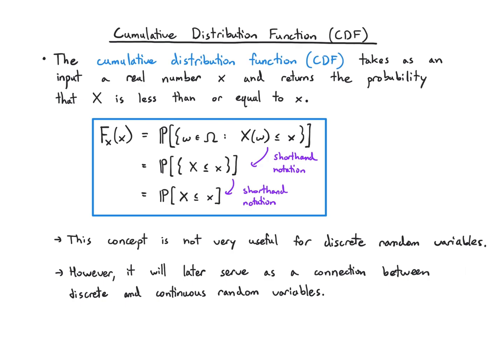All we're saying is I have this function, which I write as capital F of random variable X. When I plug in a value little x, what it gives me back is the probability that I see a value of that random variable that is less than or equal to little x.